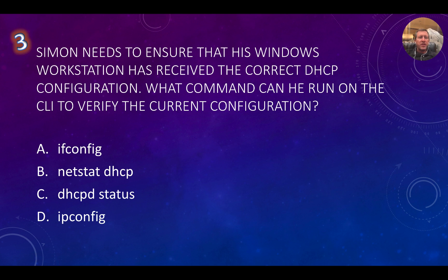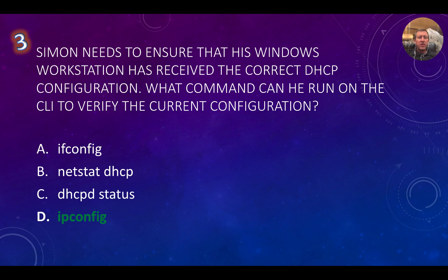Question number three: Simon needs to ensure that his Windows workstation has received the correct DHCP configuration. What command can he run on the CLI to verify the current configuration? We know that ifconfig is a Linux, Unix, or Mac command. Since we're specifically on a Windows workstation and want to verify the DHCP configuration — the IP address, subnet mask, default gateway, and everything assigned — this is going to be shown under the ipconfig command. CLI is the command line interface, so it's very important to know your acronyms for this exam.